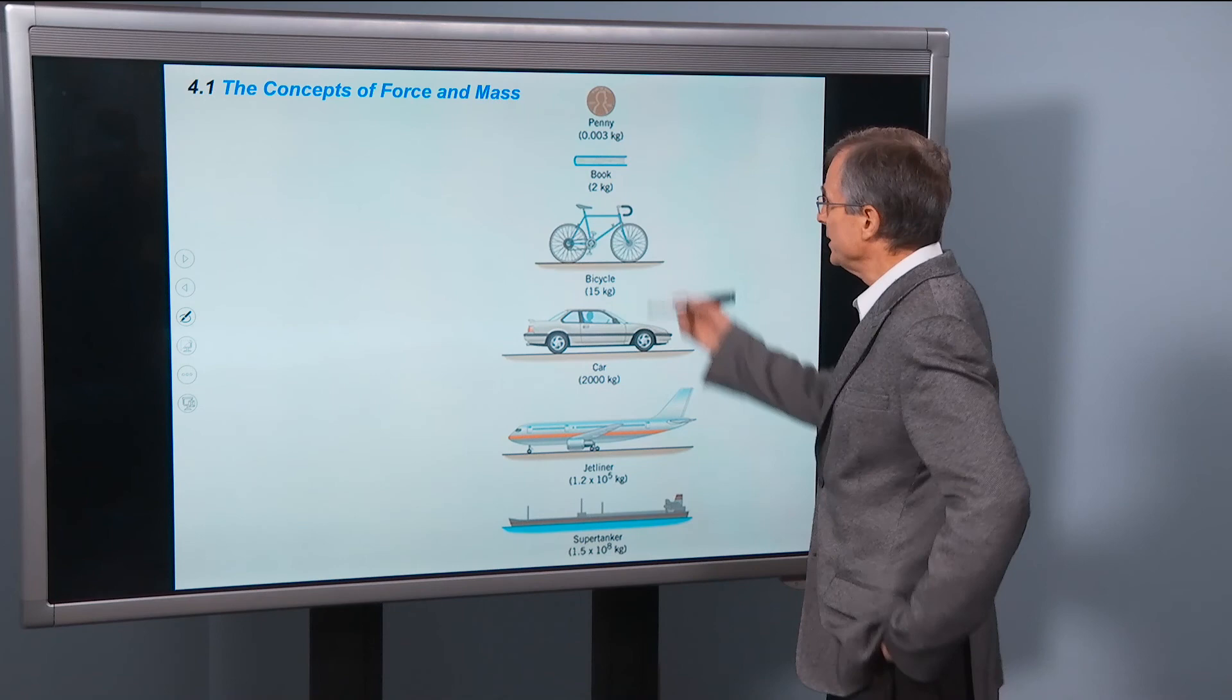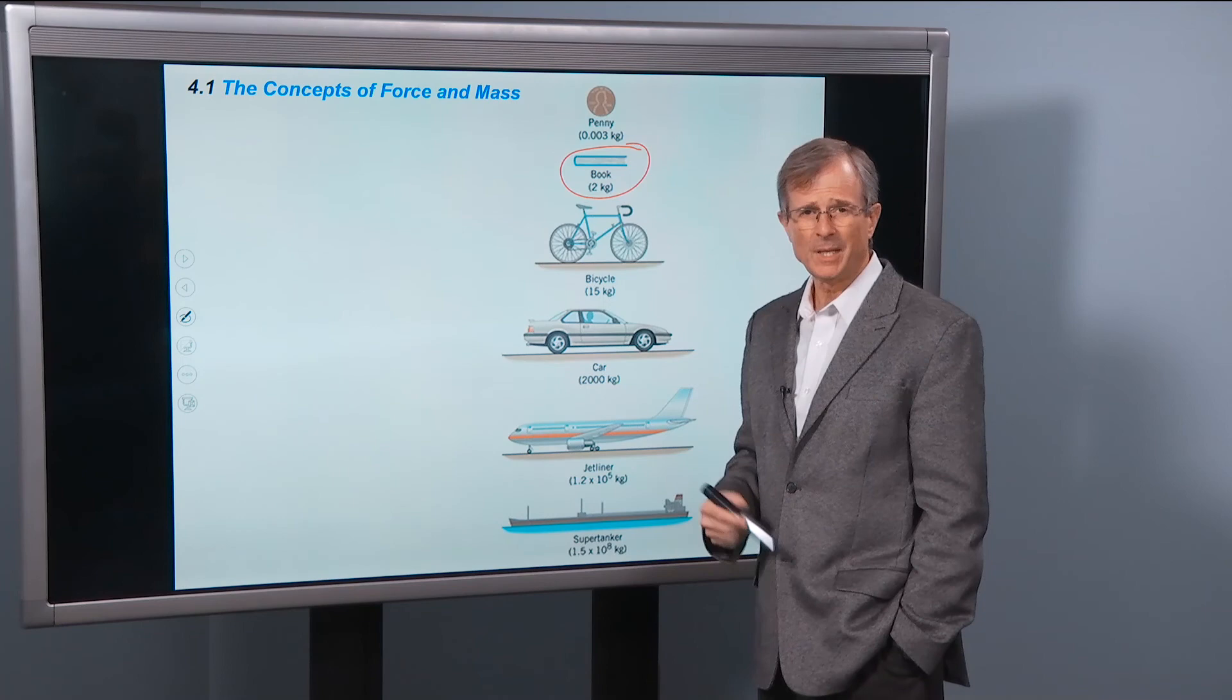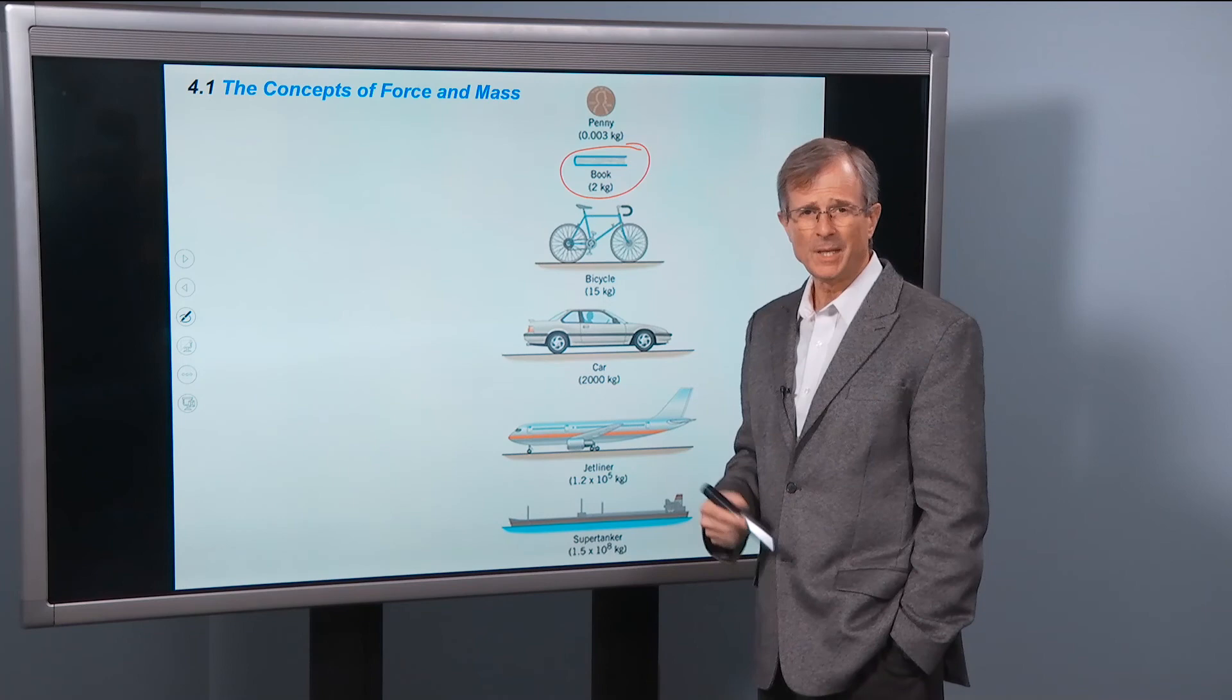Masses: a penny is about a very small amount of kilograms. A book, that's a couple of kilograms or so, just to get a handle on it. We showed in the video from chapter one, we showed a one kilogram mass. A book is a couple of kilograms. A supertanker, 10 to the eighth kilograms.